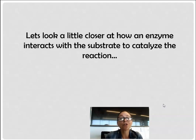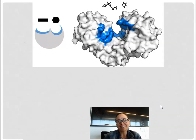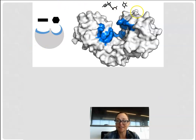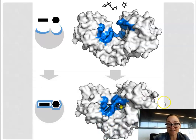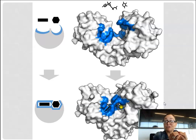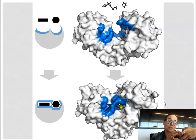Let's take a closer look at how an enzyme interacts with the substrate to catalyze a reaction. Here, the blue area is the active site, and you can see two molecules that are going to be joined together in a synthesis reaction. When the substrate attaches to the active site, the enzyme tightens a little bit around it — this is called induced fit. It orients the substrate molecules so that the bonds can form between them and produce the product.